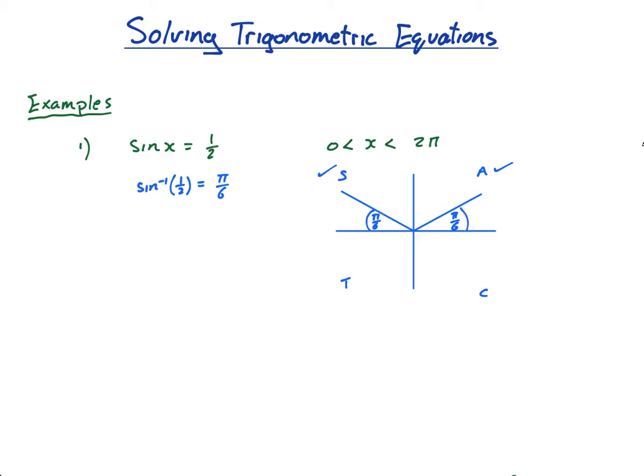Now, what are the solutions? Well, the solutions are this one, which is π over 6. And this one, which is π, because that's π. So it's π minus π over 6. What's π minus π over 6? Well, let's do π minus π over 6. What I like to do if you're struggling with this is multiply by one in disguise. So I'm going to multiply this by one, and I'm going to do 6 over 6. So I have 6π over 6 minus 1π over 6 is 5π over 6.